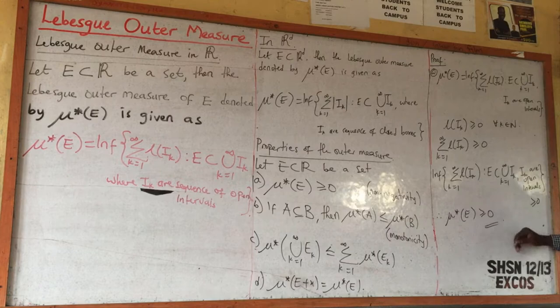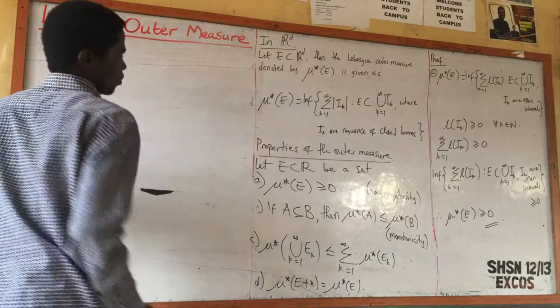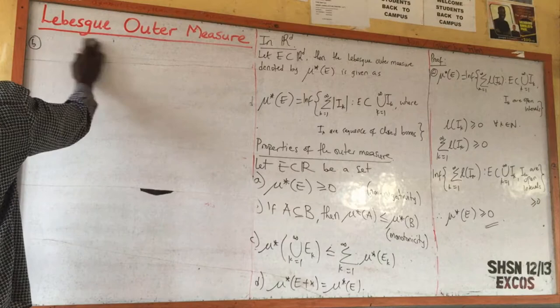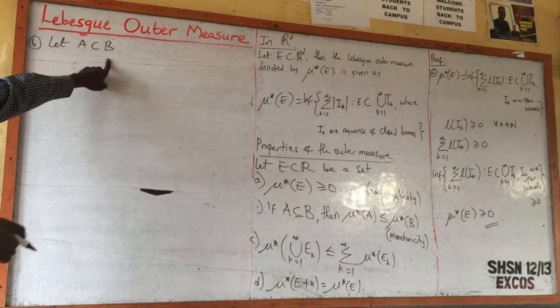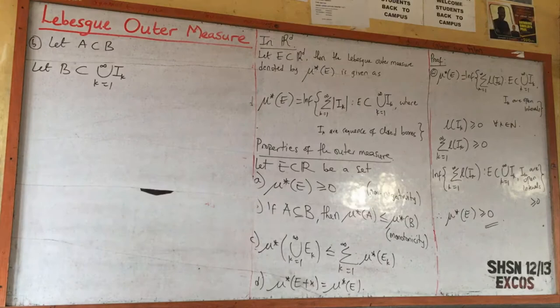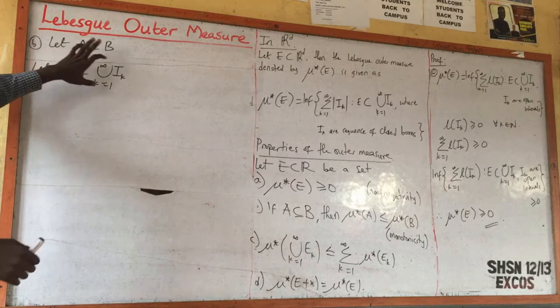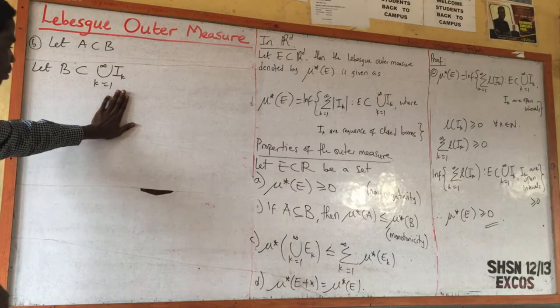Now let us prove the second property. To prove monotonicity, let A be contained in B. We take an open cover of B — that is, let B be contained in the union from k=1 to infinity of I_k, where I_k are open intervals.